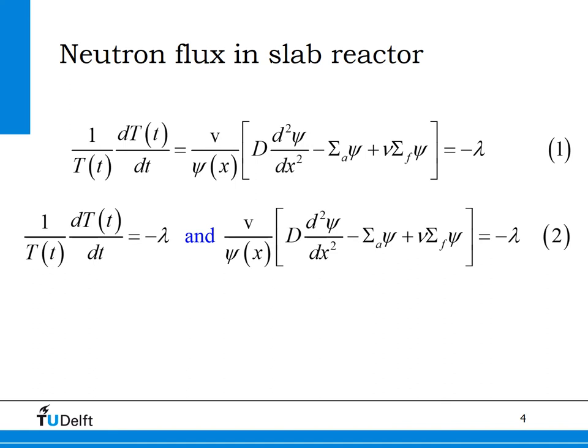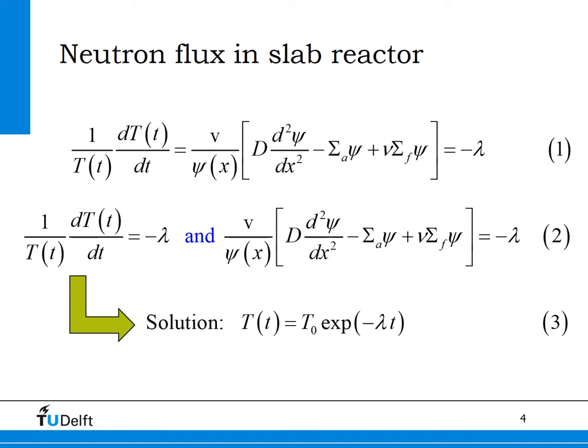The solution of the equation for the time-dependent part is just an exponential function with minus lambda times t in the argument of the exponential. It is clear that the value of lambda equal to zero gives a stationary neutron flux. Lambda is called the time eigenvalue of the problem. We will seek a solution of the space-dependent psi on the next slide.